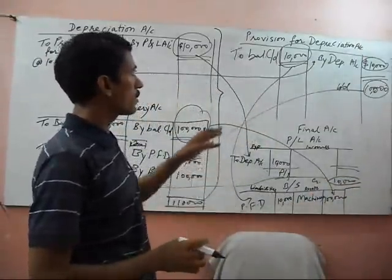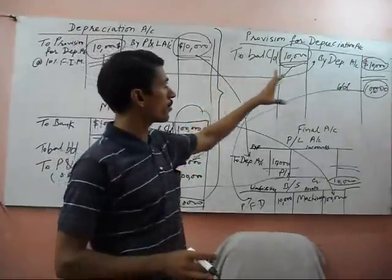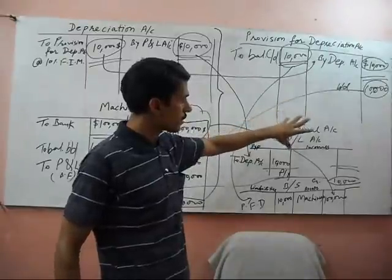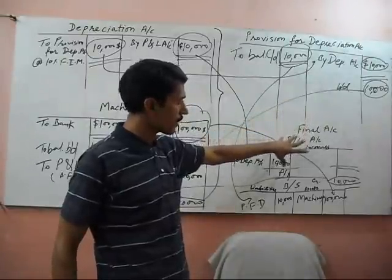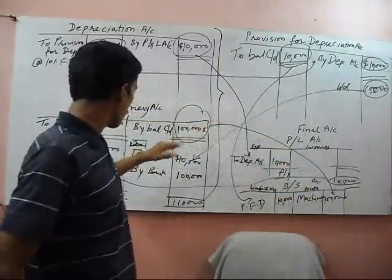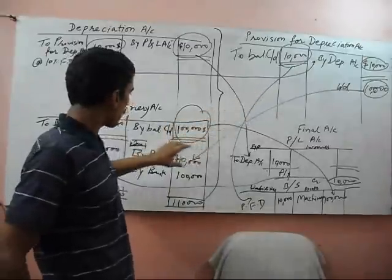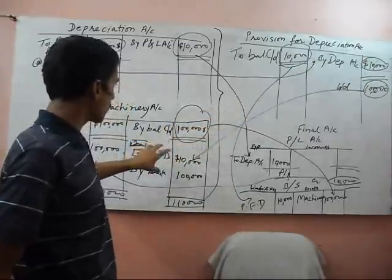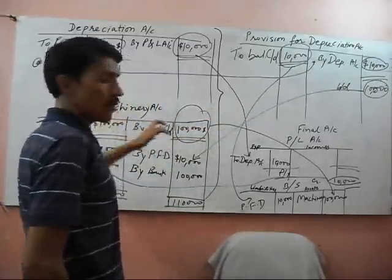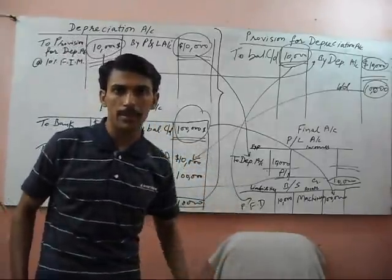I think you understand what is provision for depreciation account, and what is its effect on the final account and balance sheet. And if we sell the asset, what is the effect on the asset account? Thank you very much.